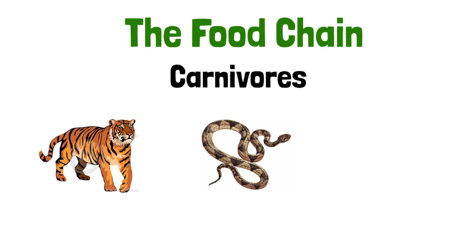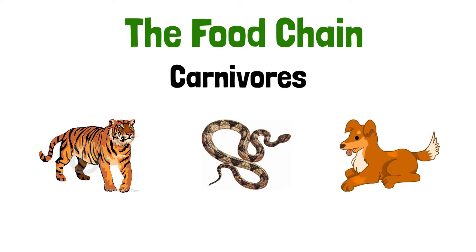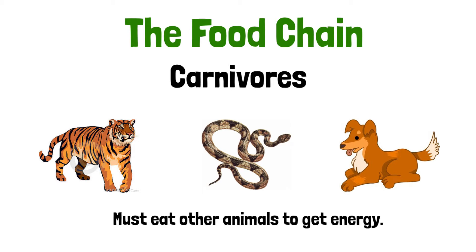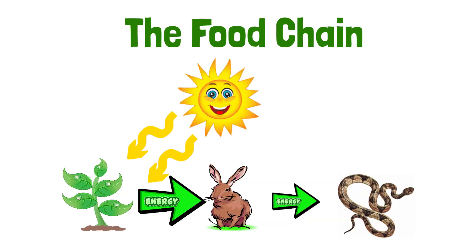Animals known as carnivores, such as tigers, snakes, and dogs, cannot get energy from plants. They must eat or consume other animals. We show the passing of energy from one organism to another using arrows. Because herbivores use some of the energy gained from the plant in order to move and grow, the carnivore is not getting as much energy by eating the herbivore as the herbivore did from the plant.